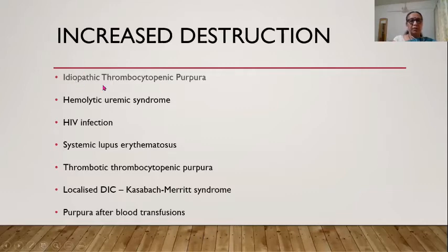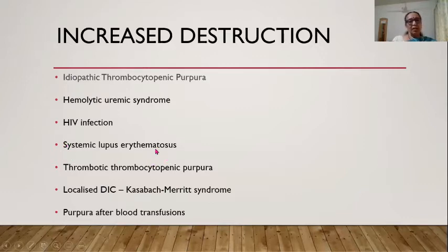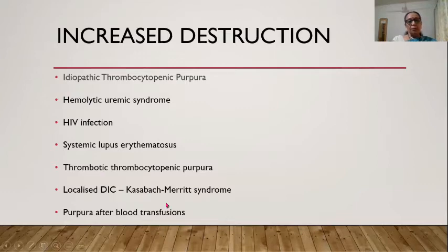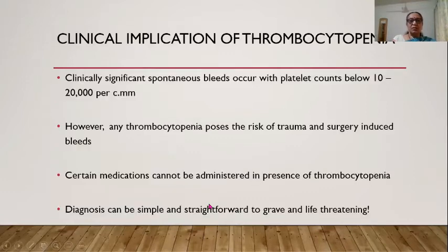DIC causes peripheral consumption and can also suppress bone marrow production. For increased destruction, ITP is the commonest cause — note it should read immune, not idiopathic. HUS, HIV (via an ITP-like mechanism), SLE and collagen vascular disorders, TTP, Kasabach-Merritt syndrome, and post-transfusion purpura are other causes of increased destruction.